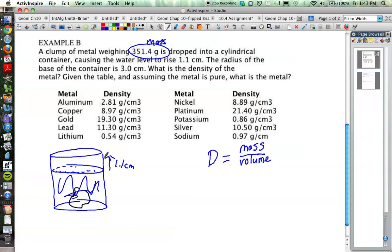What we really want is this 1.1 centimeters, this amount that the water level rises. Here's my little slice of my cylindrical container. I know the height is 1.1 centimeters. It says the radius of the base of the container is 3 centimeters. So the radius of our base is 3 centimeters. With that information, I should be able to determine the volume of this slice of the cylinder, which is the water level rising 1.1 centimeters.